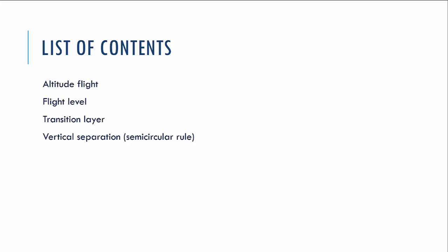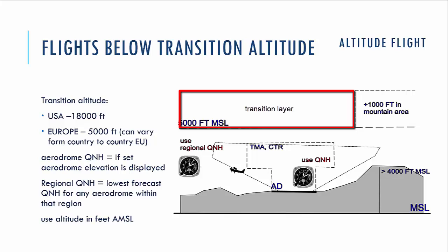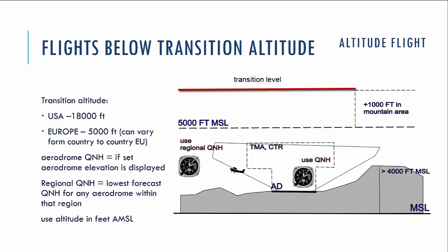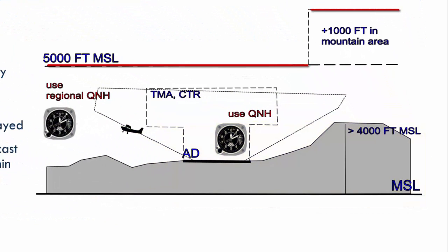Let's start with flights below the transition altitude. Transition altitude is the lower boundary of the transition layer. The upper boundary of this transition layer is at the transition level. We will talk about the transition layer later in this video. The transition altitude in the USA is 18,000 feet. In Europe it's 5,000 feet. It can vary from country to country, depending on the average elevation of the surface of the country.